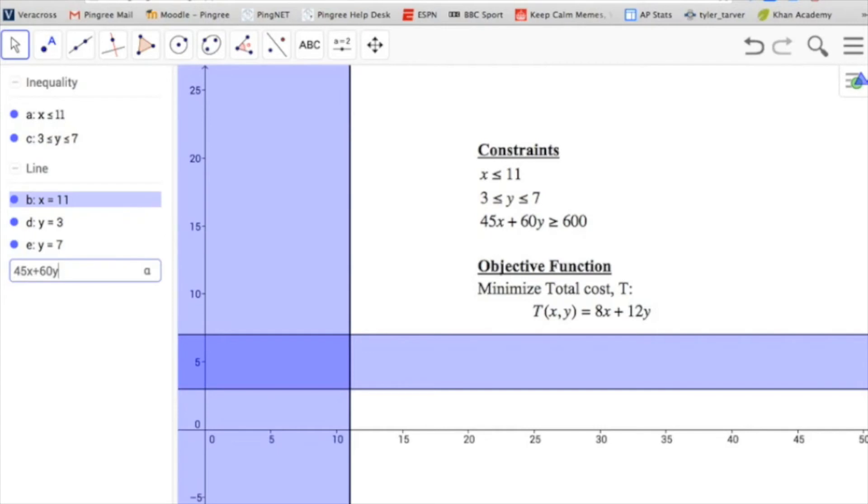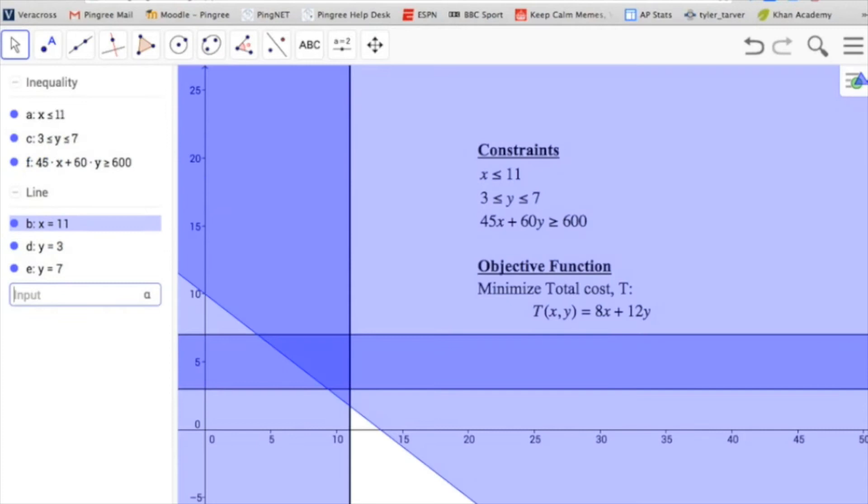Now let's create my third constraint. And now you can start to see that we've got some overlap.